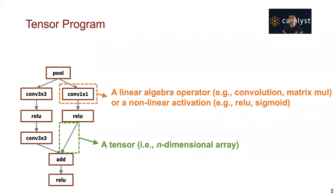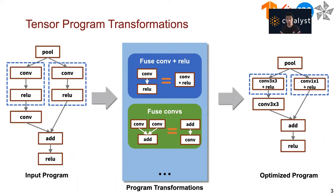Machine learning computation is typically defined as tensor programs, represented in graph structures. Each node denotes a linear algebra operator, such as convolution or a non-linear activation function such as GELU, and each edge is a tensor shared between operators. To optimize the performance of a tensor program, existing frameworks use program transformations to iteratively optimize the graph structure of an input program to obtain an optimized program.